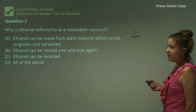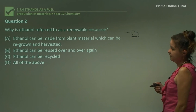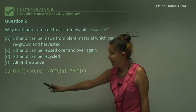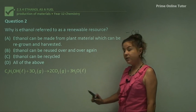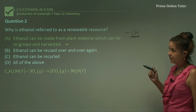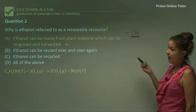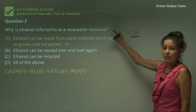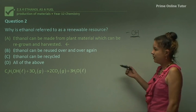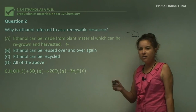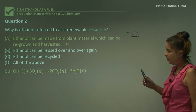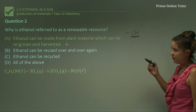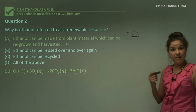Question 2: why is ethanol referred to as a renewable resource? Looking at the complete combustion equation, ethanol and oxygen produce carbon dioxide and water. The answer is: ethanol can be made from plant material, which can be regrown and harvested — that's why it's renewable. With fossil fuels, they take hundreds of thousands of years to produce through the decay of biomass and biological systems, so they cannot be renewed.